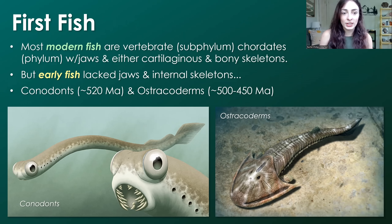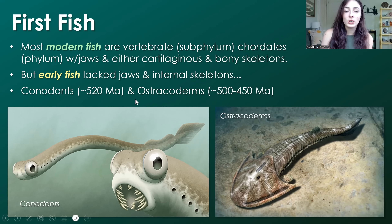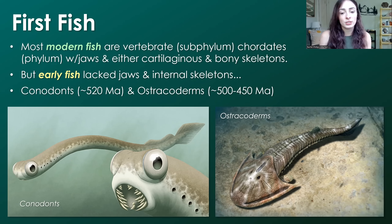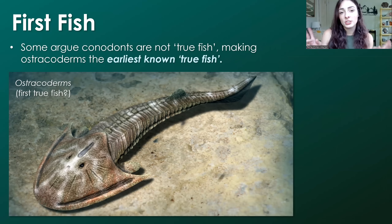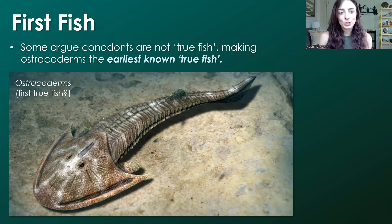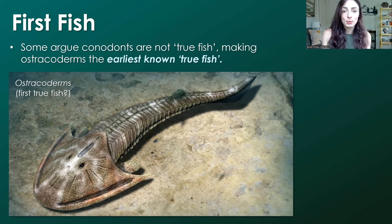The earliest fish we find in the rock record are things like conodonts and ostracoderms. Conodonts appear around 520 million years ago, and ostracoderms around 500 to 450 million years ago, depending on which fossil record evidence you go with. Some argue conodonts are not true fish, making ostracoderms the earliest known true fish. Although these fish lacked jaws and internal skeletons, they did have a bony outer exoskeleton that helped protect them from other predators at the time.